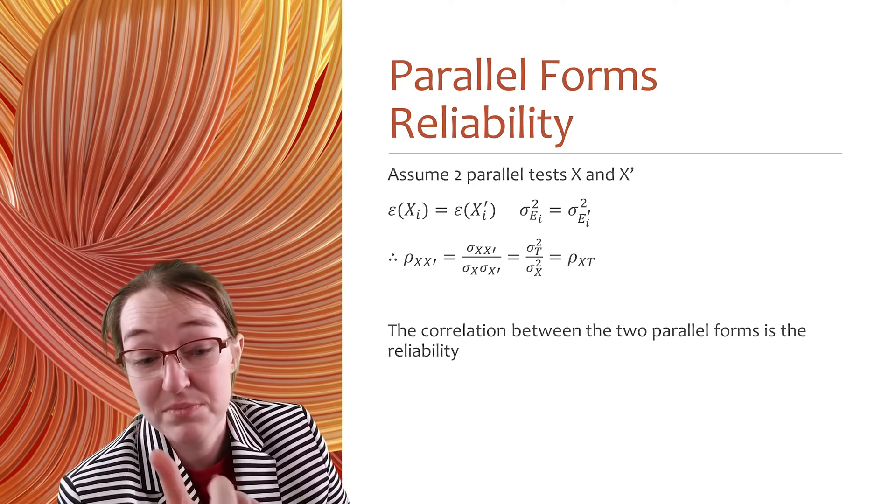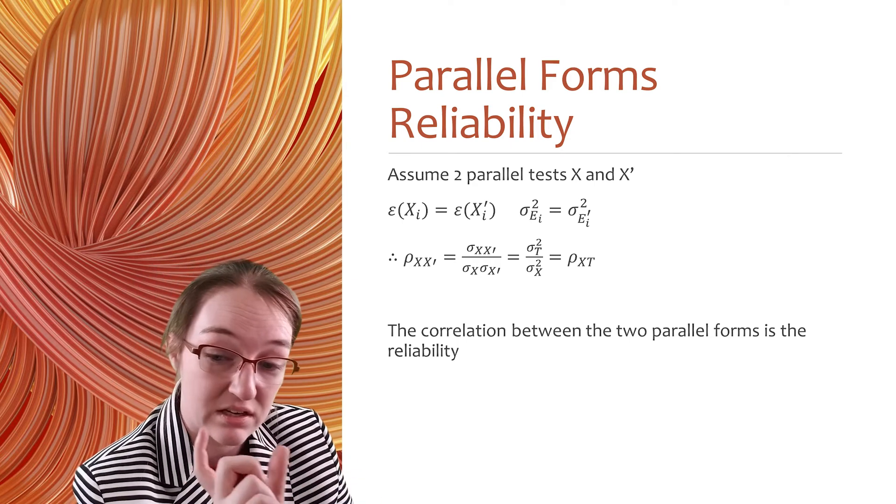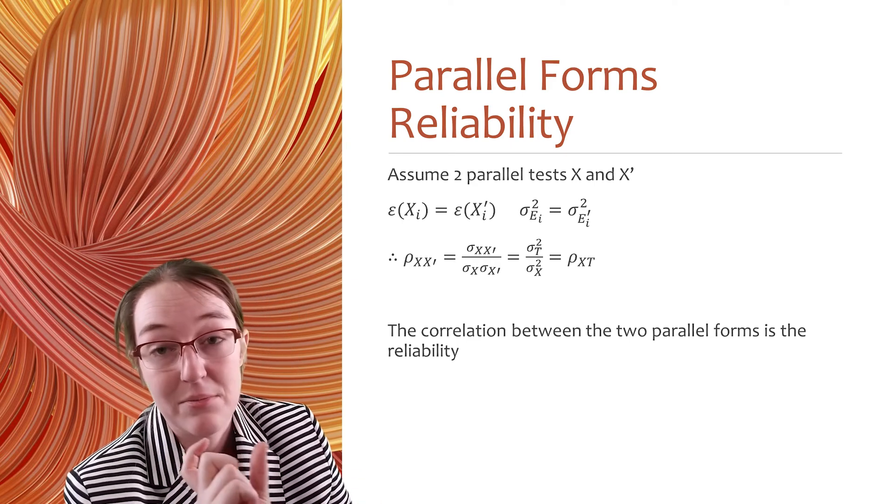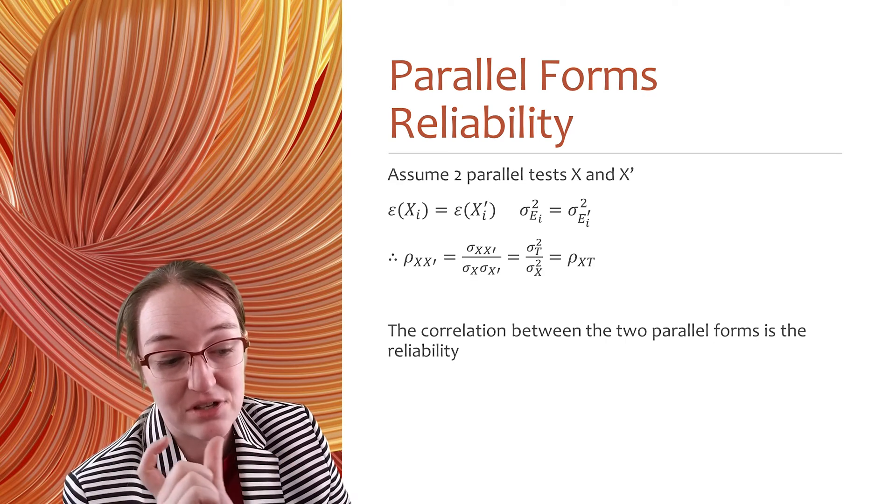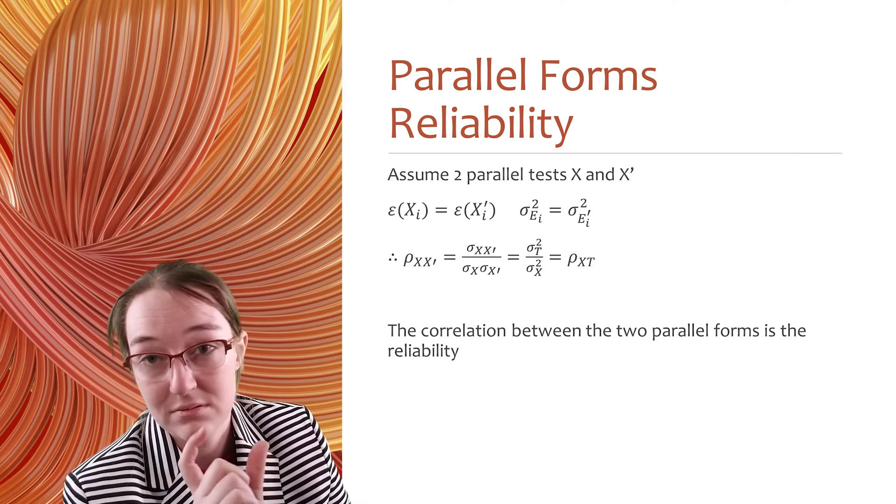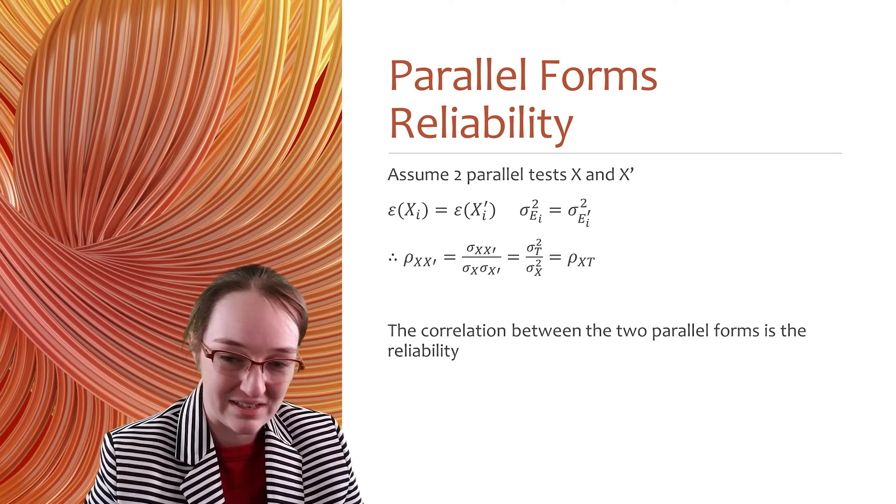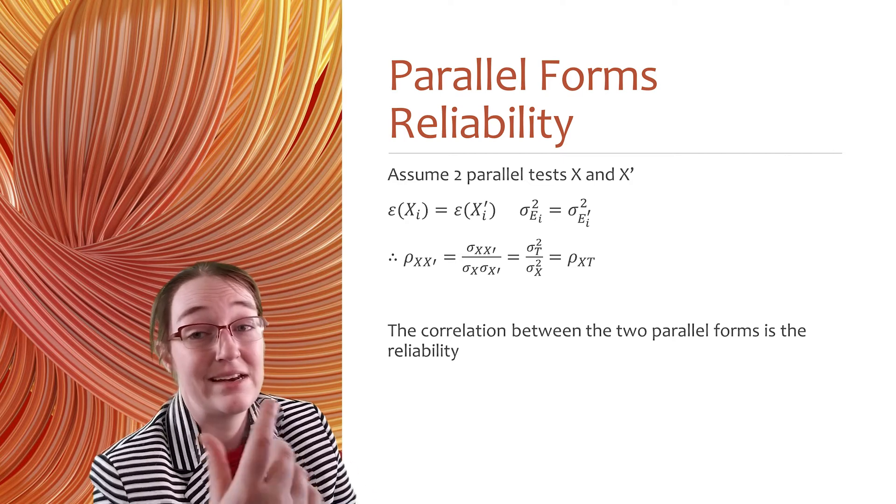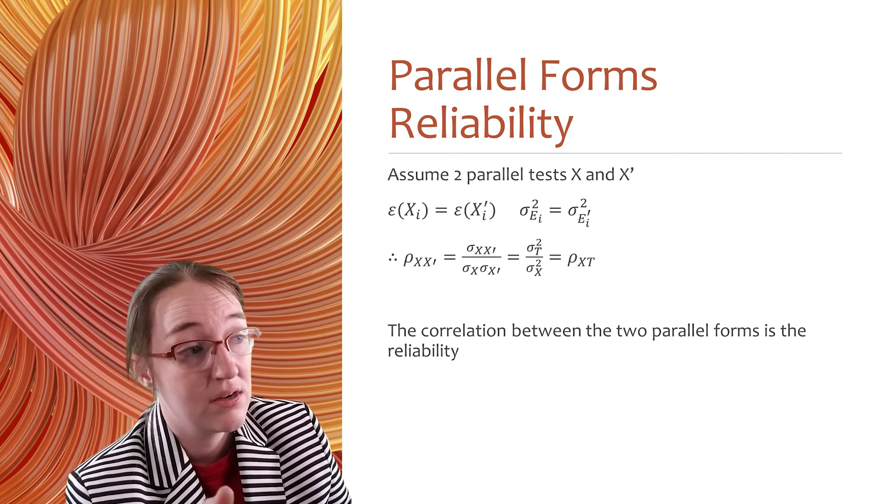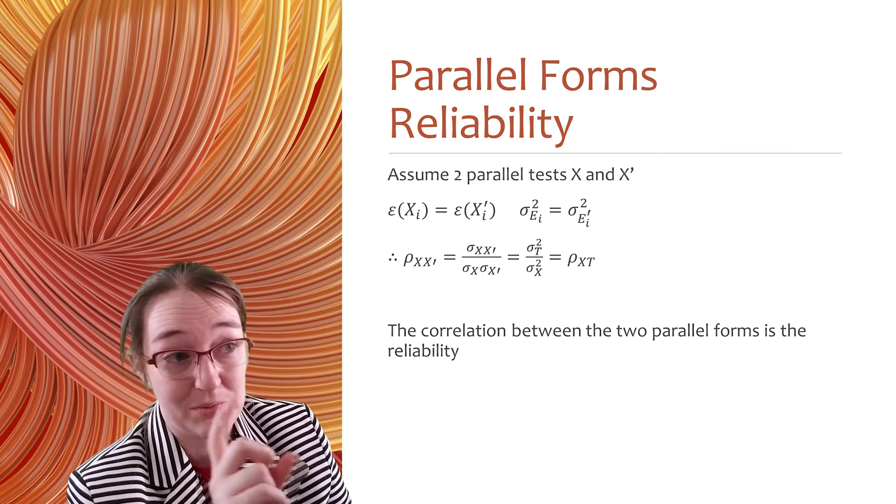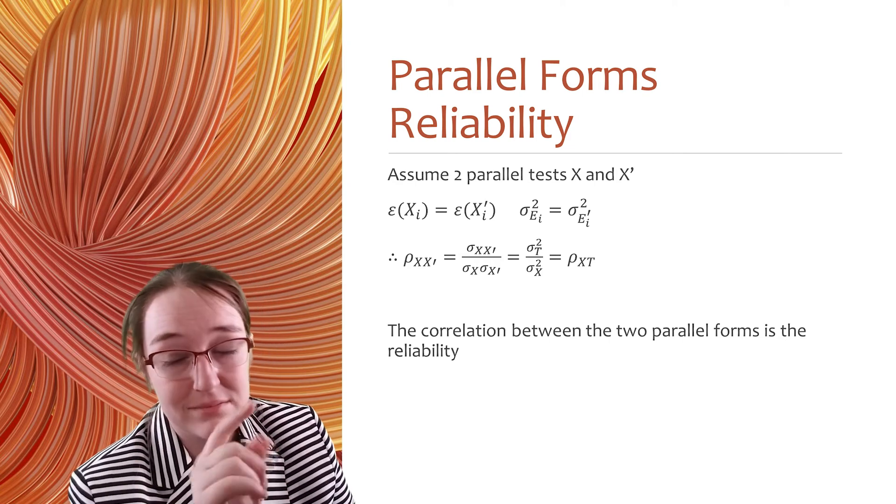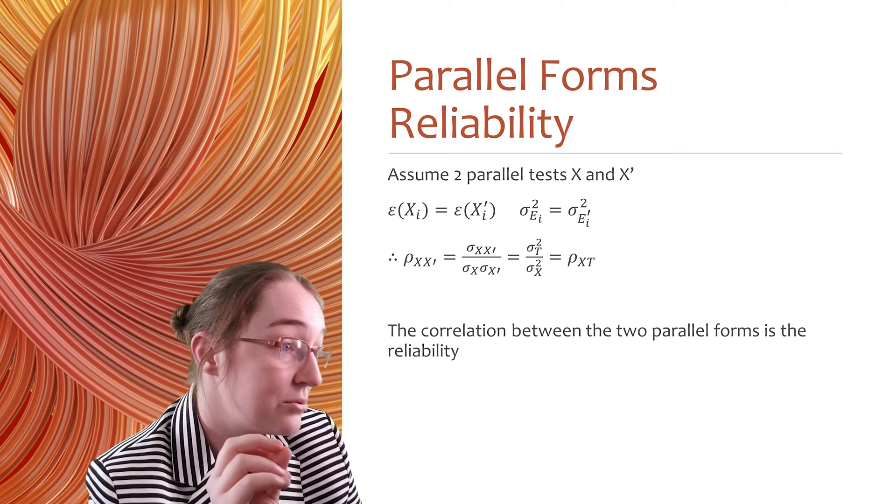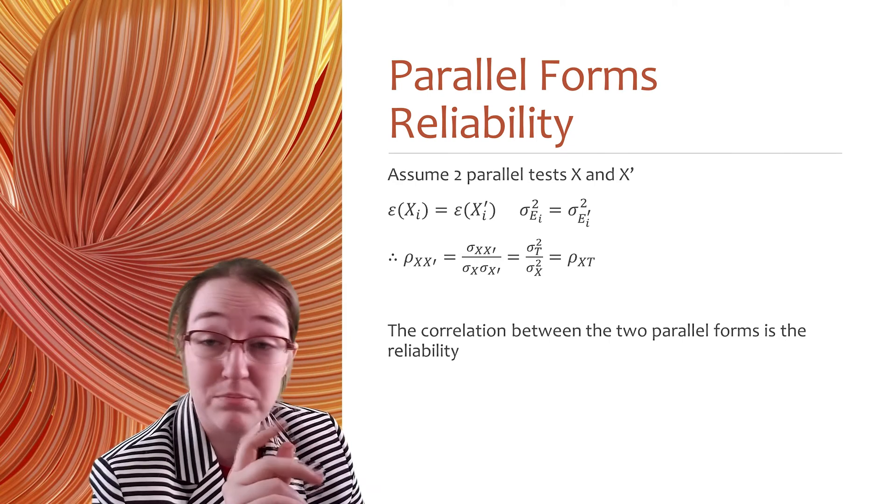So, test takers may do better or worse on specific forms of the test, and that's not really a function of their true ability, but rather luck on which set of items they get for their specific test. Now here, let's assume for our parallel test, we've got x and x prime.